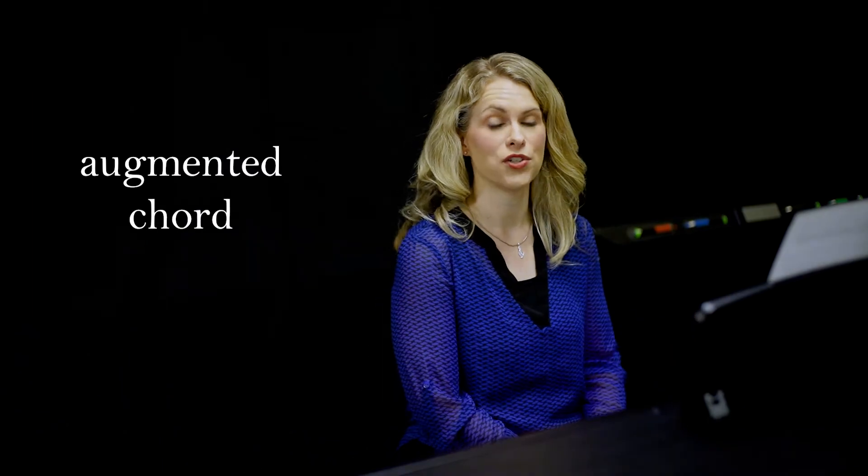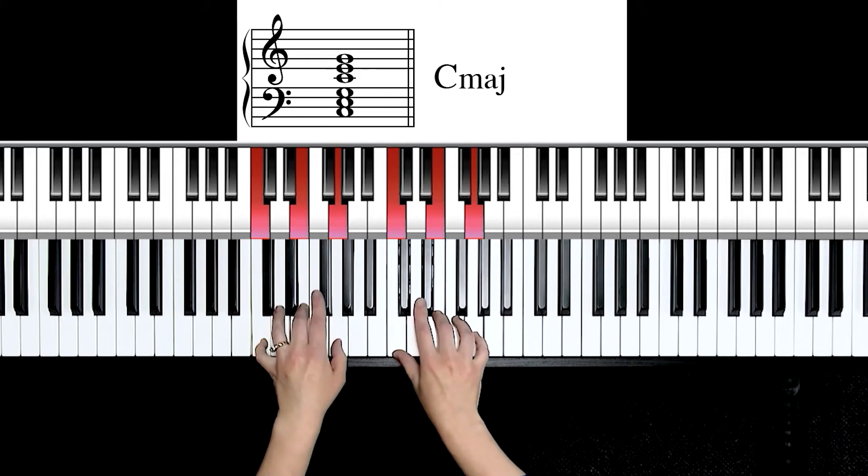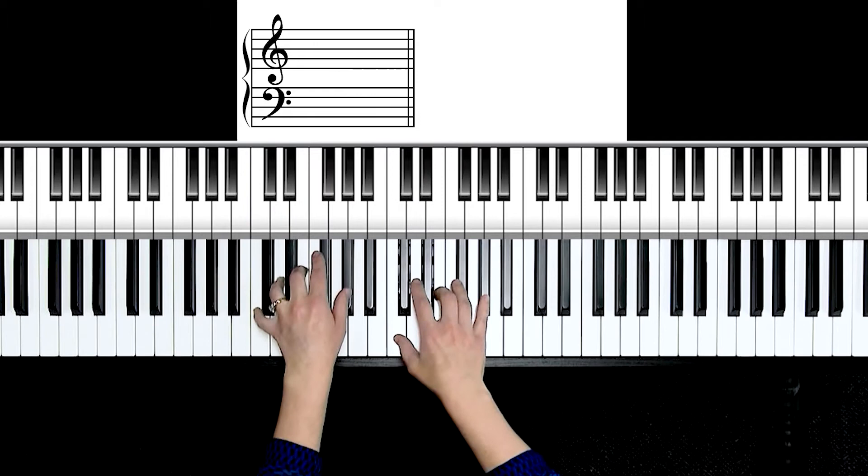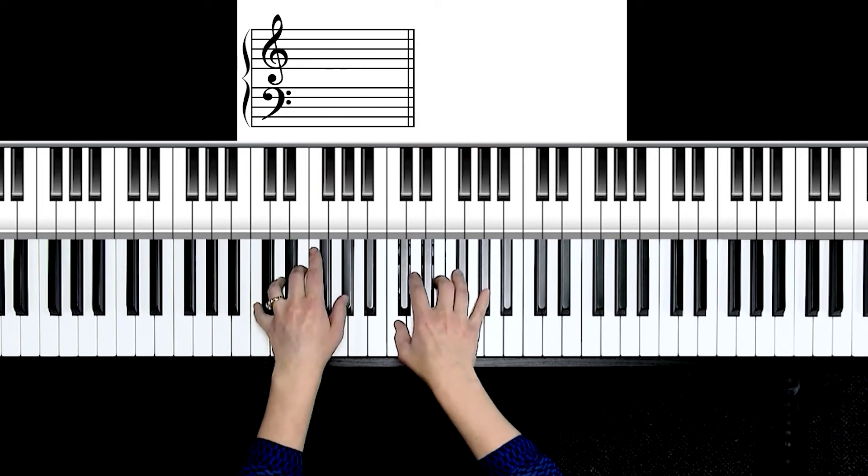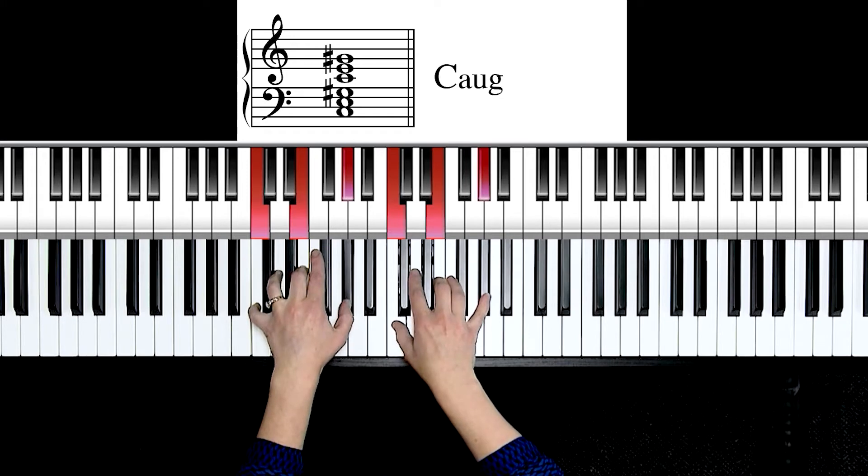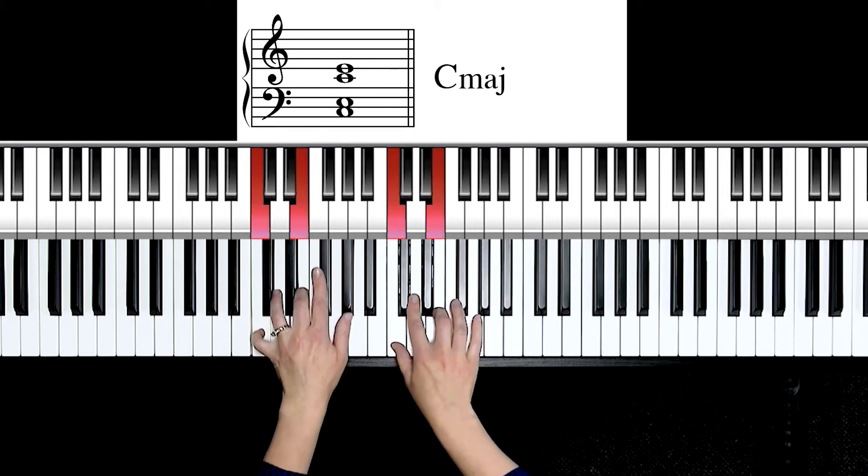Let's move to some new chord qualities. Augmented. The word augmented literally means something that's made larger in value or size. Let's go back to C major. To make an augmented chord, you're going to take the fifth of the chord, which is G, raise it up one half step, and it becomes G sharp. You might need to slide in towards the fallboard to get your shorter fingers to be on that black key comfortable.